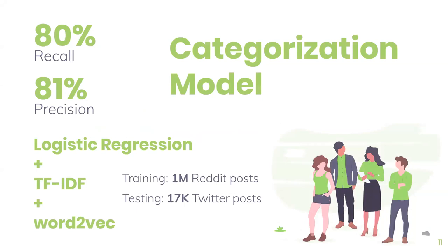For our categorizer, it categorizes posts based on content so users can browse posts by category like sports, politics, and others. We also use this module's output in the content-based filtering. We collected one million posts from Reddit, then built our model using logistic regression, TF-IDF, and Word2Vec, then tested the model on 17,000 Twitter posts and got a recall of 80% and a precision of 81%.